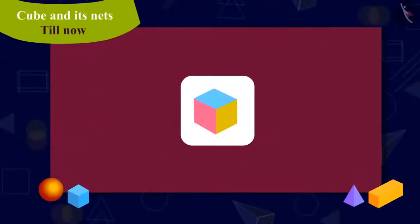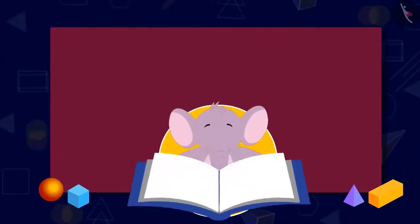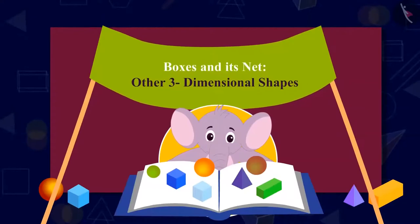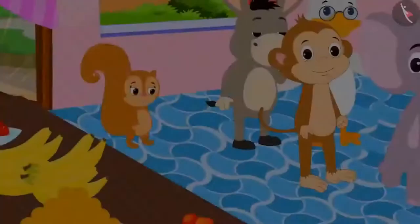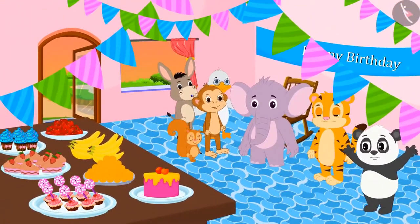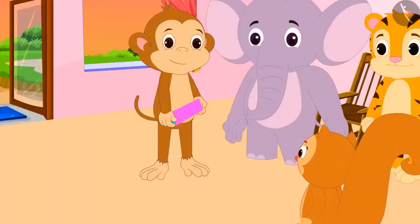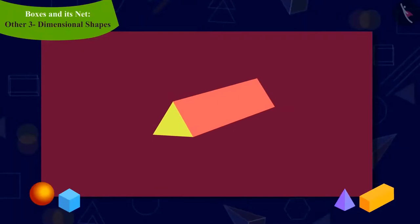Kids, in the previous video, we learned about the cube and its net. In this video, we will learn about other three-dimensional shapes and their net. When Chanda reached Appu's party, she saw that there were many people there. Chanda noticed that Babban brought a pencil box of this shape for Appu.